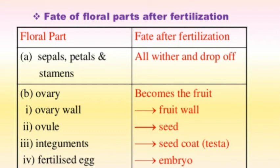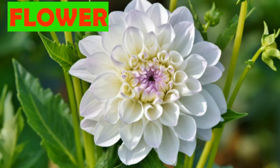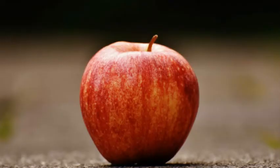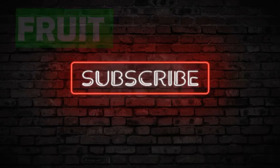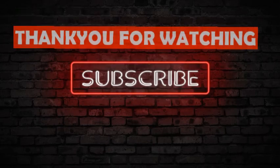You can see here that the fertilized egg forms the embryo. This is a very important chart — the fate of floral parts after fertilization, showing how the parts of the flower transform into fruit.